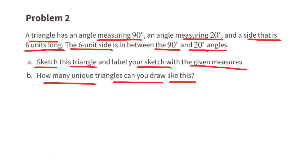Part b: how many unique triangles can you draw like this? You can draw only one unique triangle with these exact measures, as long as the 6-unit side length is between the 90 degree angle and the 20 degree angle.